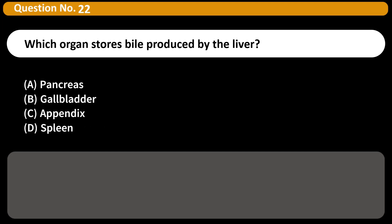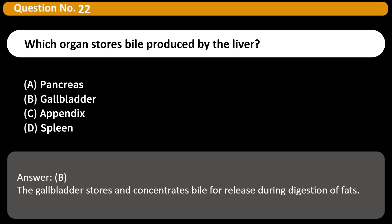Which organ stores bile produced by the liver? A) Pancreas, B) Gallbladder, C) Appendix, D) Spleen. Answer: B. The gallbladder stores and concentrates bile for release during digestion of fats.